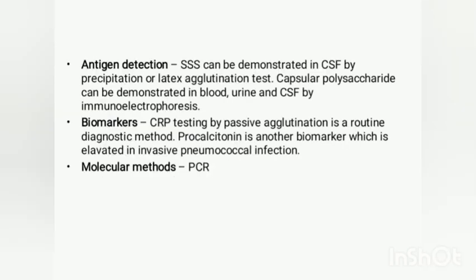For antigen detection, since soluble specific substances and capsular polysaccharides are antigenic, they are identified by methods such as precipitation, latex agglutination, counter immunoelectrophoresis, and immunochromatography. Immunochromatographic technique is used for antigen detection from urine. SSS is identified by precipitation or latex agglutination, and capsular polysaccharide is identified by counter immunoelectrophoresis from blood, urine, or CSF.